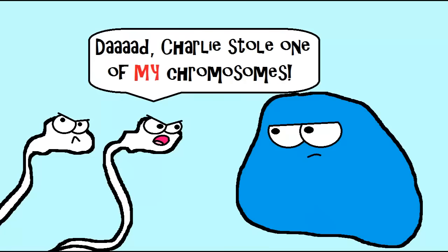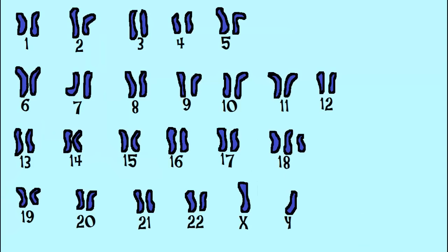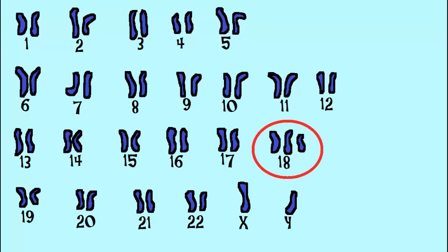Non-disjunction results in an egg or sperm that has too many or too few chromosomes. That can cause a genetic disorder depending on which chromosome we're talking about. Different chromosomes contain different genes, so the specific chromosome that's affected really does make a difference in the result.